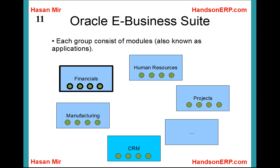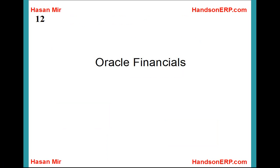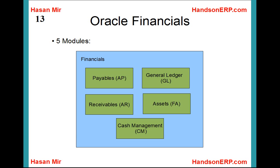For example, Oracle Manufacturing is simply a group of individual standalone applications. All these groups together are called Oracle E-Business Suite — 'Suite' is the proper word used here. Oracle Financials consists of five modules. The terms 'module' and 'application' are synonyms, so you can say Oracle Financials consists of five applications.